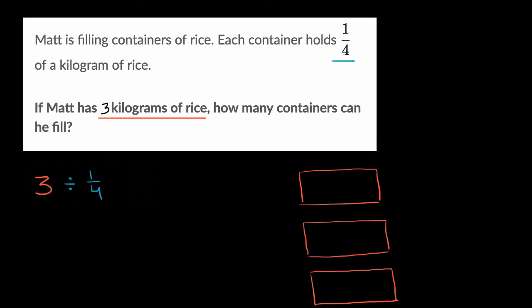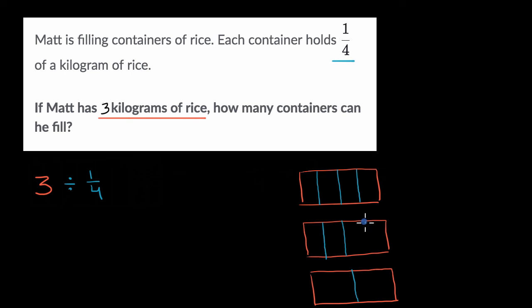Let's do that. If we were to divide the three wholes into halves, it would look like this. And then if we divide into fourths, it would look like this — trying to get close to equal sections. So I've taken three wholes and divided them into fourths. How many fourths are there? One, two, three, four, five, six, seven, eight, nine, ten, eleven, twelve fourths.